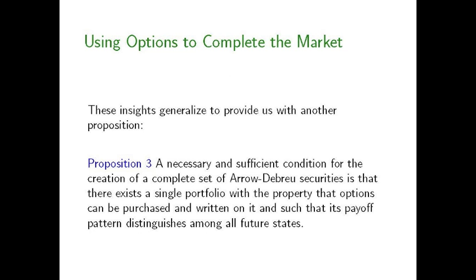Just as we did in part one of the presentation, we can use the insights from these initial examples to state another proposition. Proposition three says a necessary and sufficient condition to create a complete set of Arrow-Debreu securities — that is, to synthesize a complete set of Arrow-Debreu contingent claims, one for each possible state looking ahead from today to the future — is that A, there must be a single portfolio of stocks that are traded with the property that options can be purchased and written on it, and B, that portfolio must have a payoff pattern that distinguishes among all future states: the value of the portfolio must be different in each possible state of the world than it is in any other state.